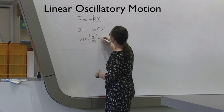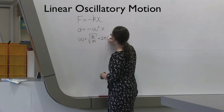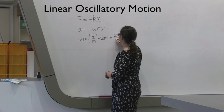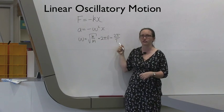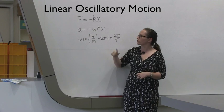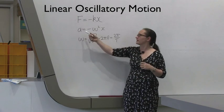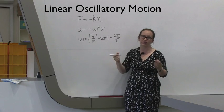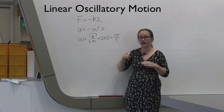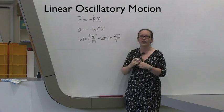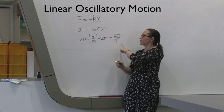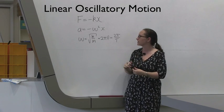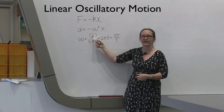Omega is also equal to 2 pi f, which is also 2 pi on T, where T is the period of the spring. You're going to look at a graph of acceleration, displacement, and velocity, and how they change with time as the spring oscillates. From these graphs, you can work out the period of oscillation of the spring, which is going to allow you to calculate k.